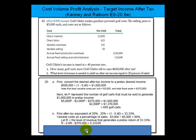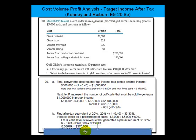R minus 0.6R gives us 0.4R. We then subtract 0.333R by moving all the R terms to one side. So we get 0.4R minus $370,000 equals 0.333R. Moving everything to one side, we get 0.0667R equals $370,000.